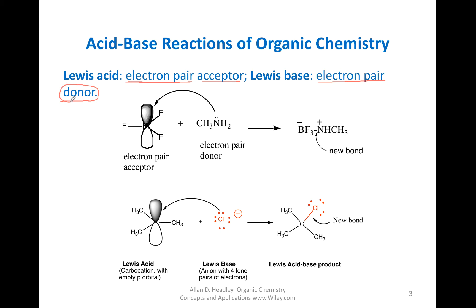Let's look at a couple of examples. BF3: boron is sp2, which means it has a vacant unhybridized p orbital. It can accept electrons from an amine into this p orbital to form a new bond and a product. So in this case, the amine with its electron pair is the donor — hence, the base. And BF3, which has a vacant orbital that can accept a pair of electrons, is the Lewis acid.